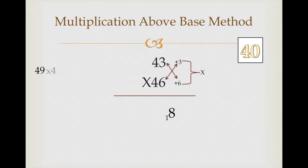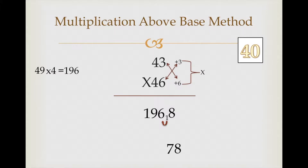Multiply 49 by 4 because we have considered base 40. 49 times 4 gives 196. Now adjust the carry to get the answer: write 8 as it is, then adjust the carry — 1 plus 6 makes 7, write 7, write 9, write 1. Our answer is 1978.